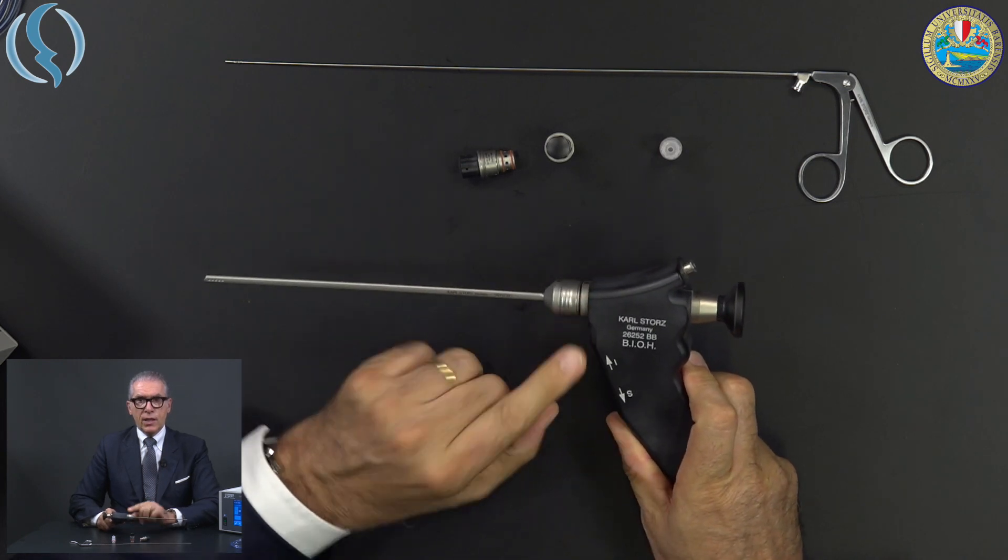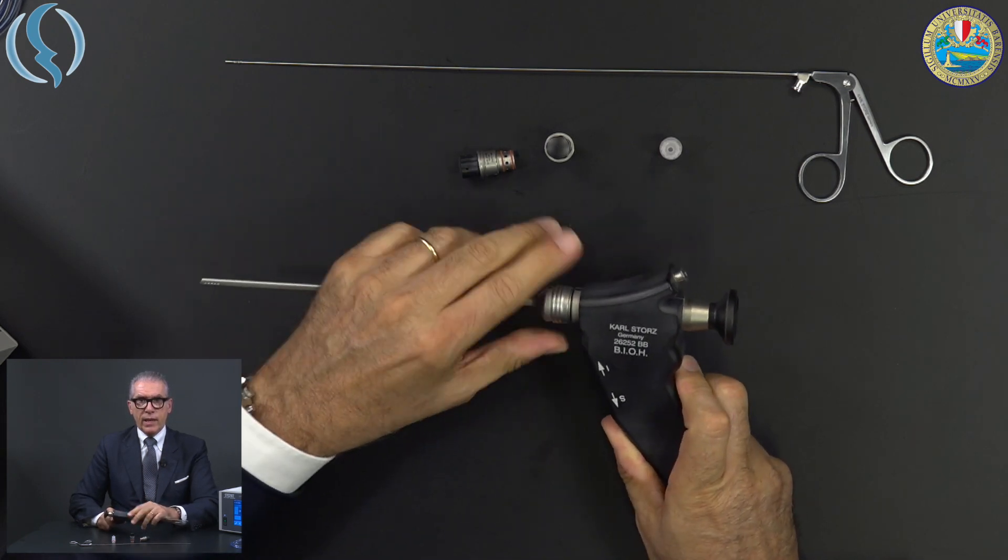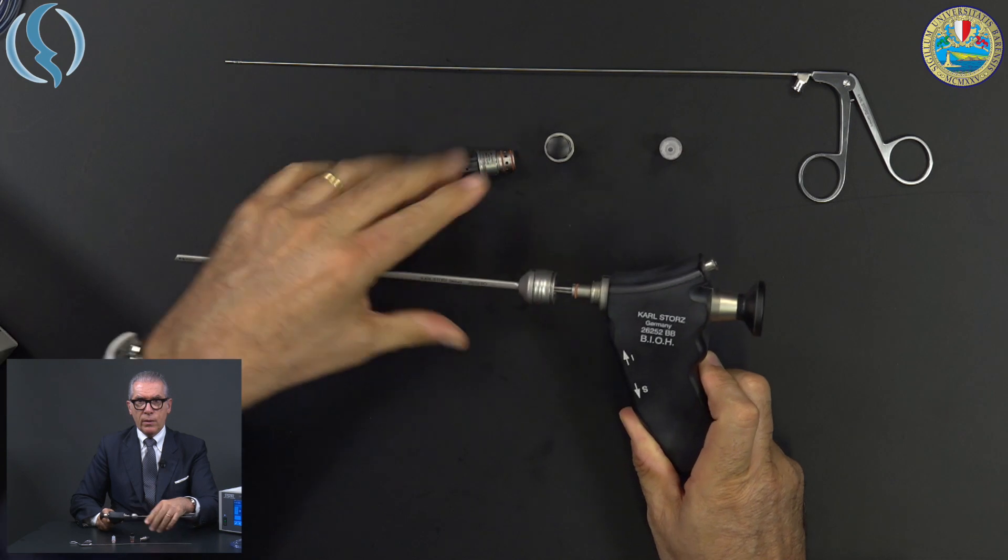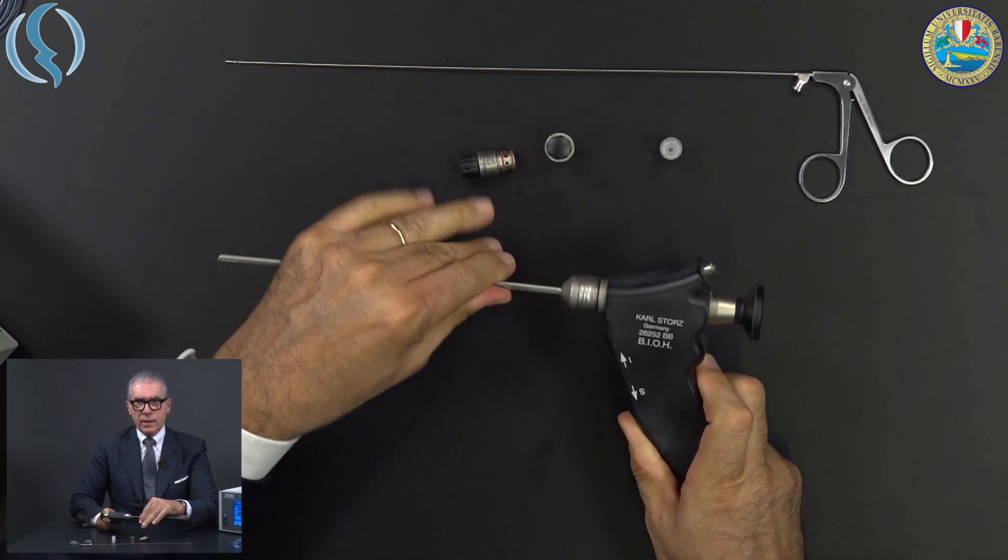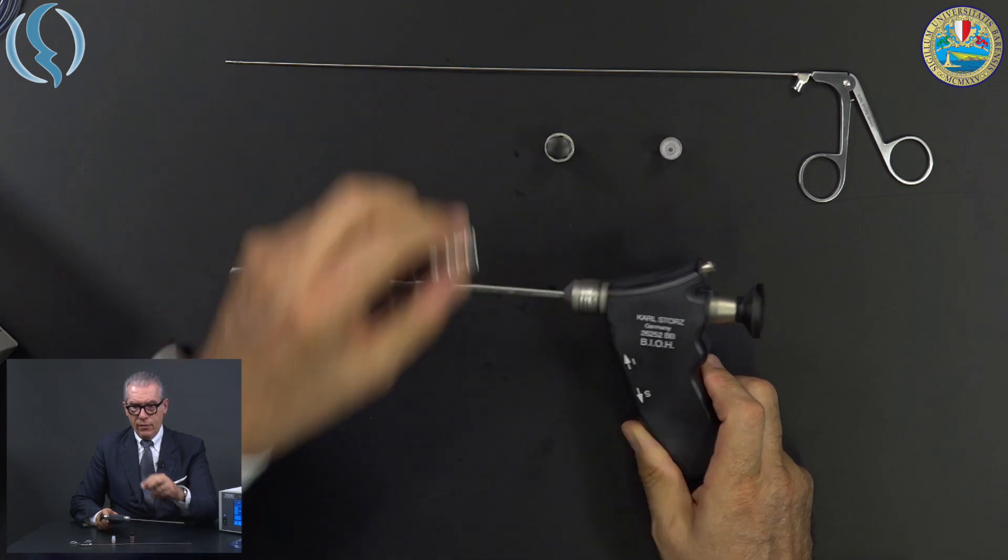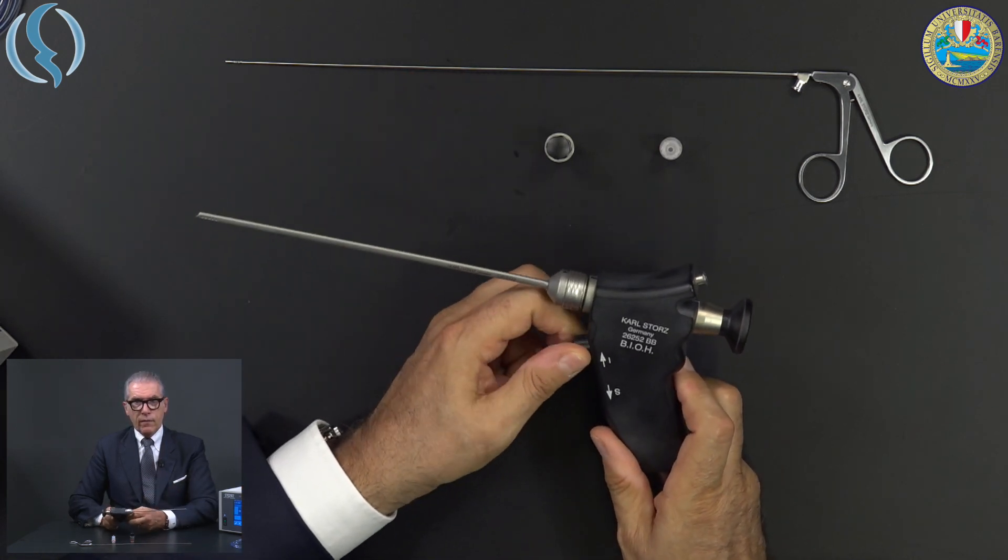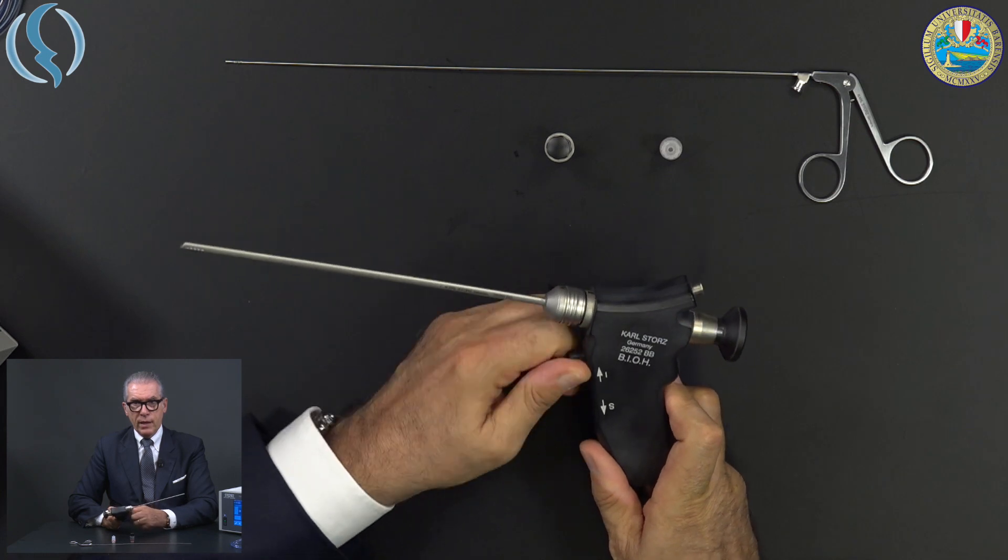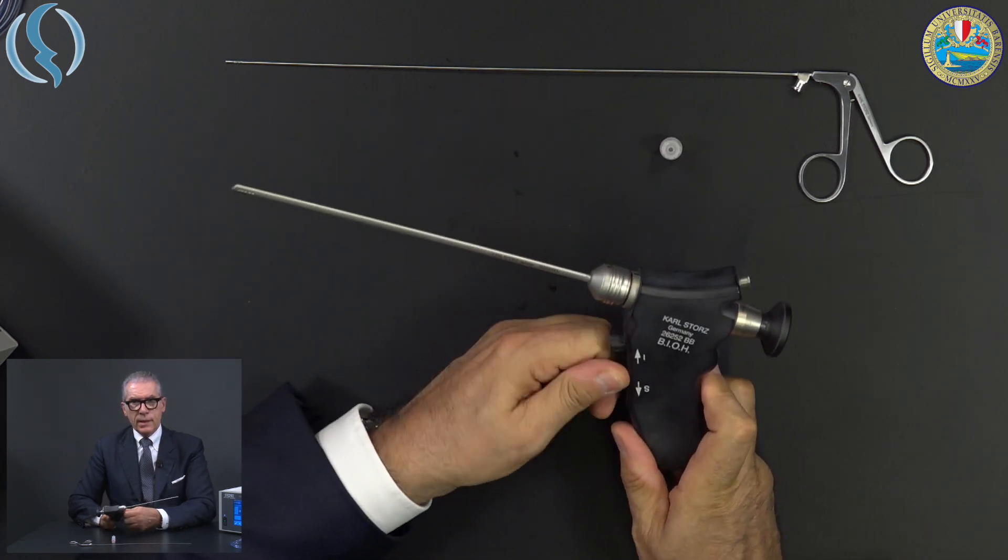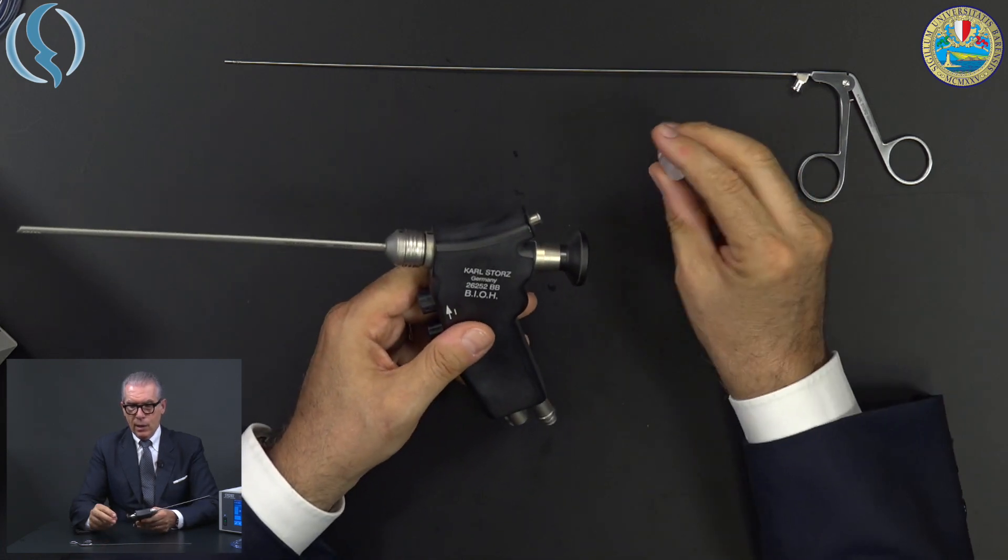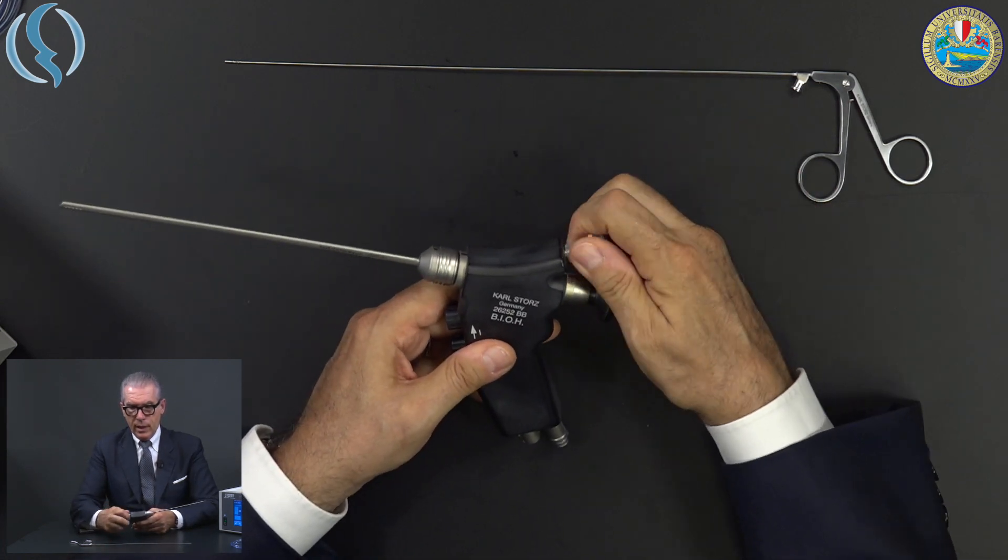You see this is the sheath with the new mechanism, very easy to use and very stable, like a click line system. Then we have our valves with the screw like this. And finally our rubber seals, our automatic valve.